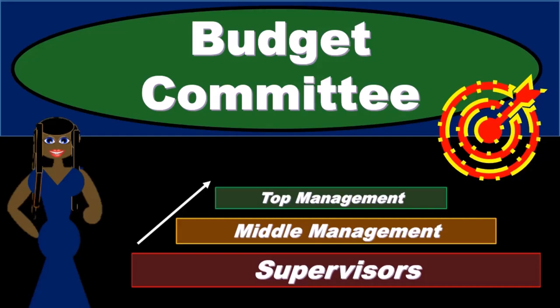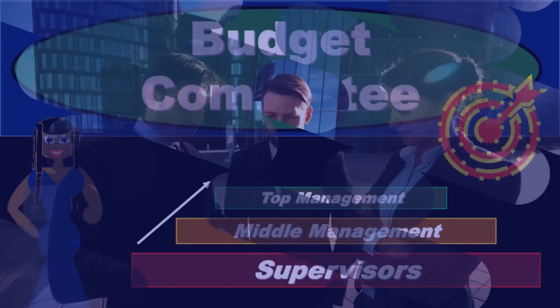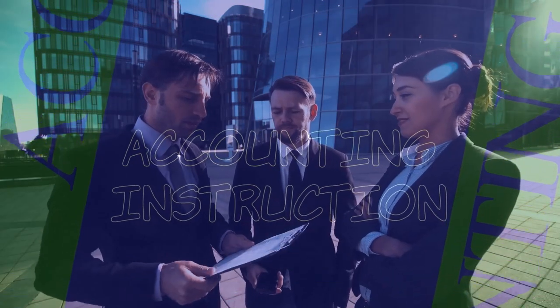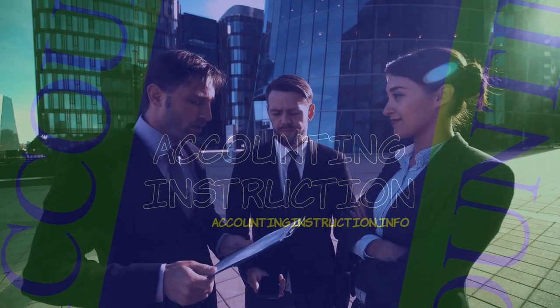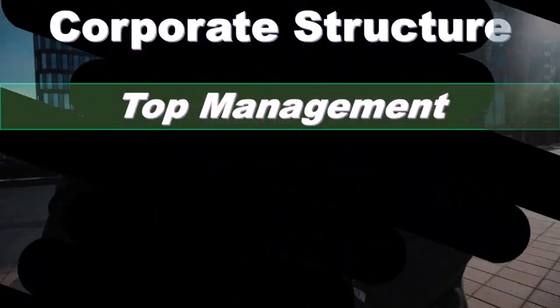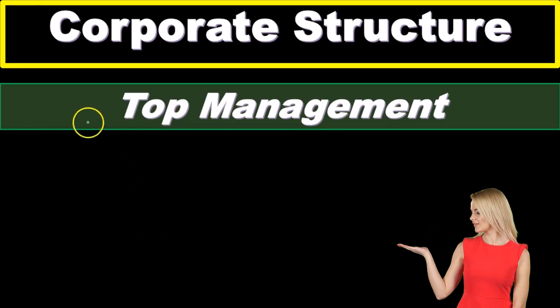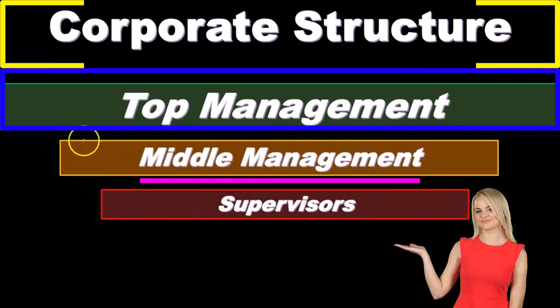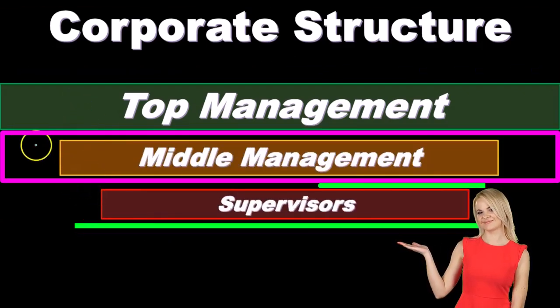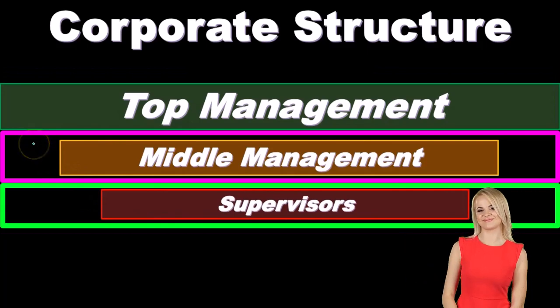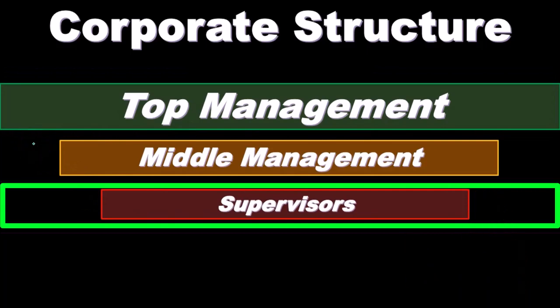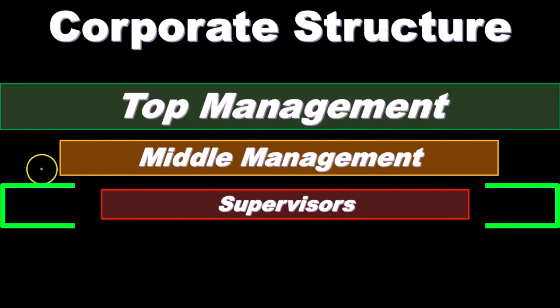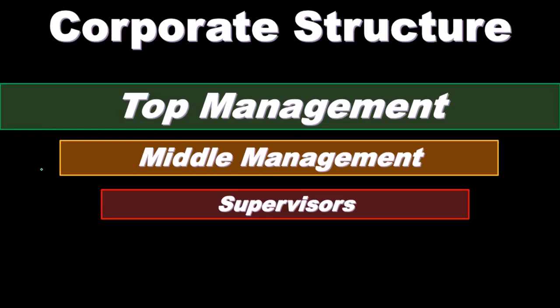In this presentation, we will take a look at the budget committee as we go through the budgeting process. When we consider the corporate structure, we typically consider it as a top-down type of structure. We have the top management, we have the middle management, then we have the supervisor. Top management holds the overarching goals and objectives, and middle management helps to oversee the supervisors.